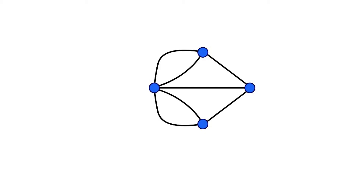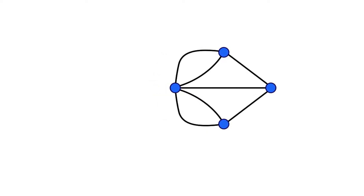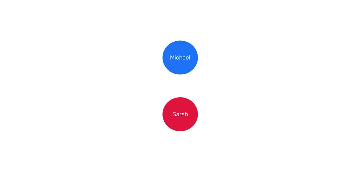Another example that everyone can relate to is the concept of a social graph. People interact with each other and form relationships of varying strengths. Here we see two nodes that represent two people, Michael and Sarah. Entities that could be represented as nodes are things like people, products, events, books, or substations.